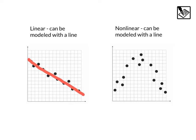In our second example, for a nonlinear, if we drew kind of a curve here to fit the points, that association is definitely not going to be modeled with a line. So we say that's nonlinear.